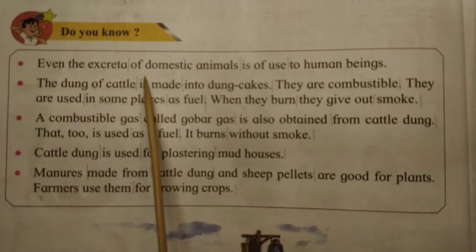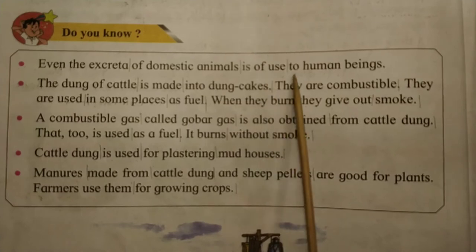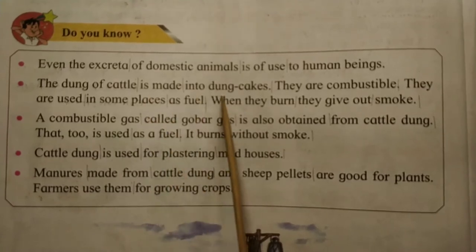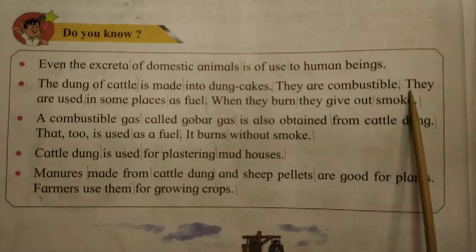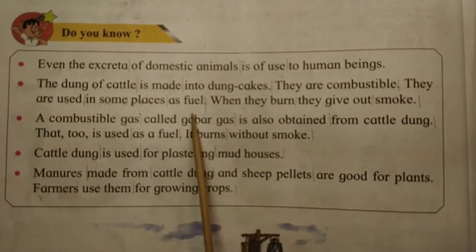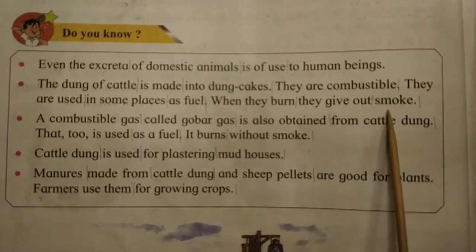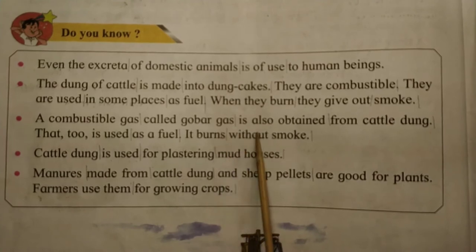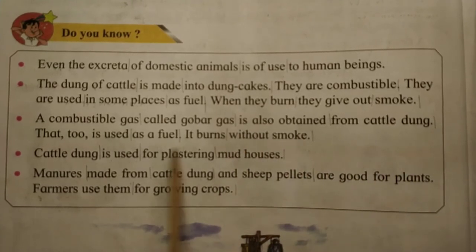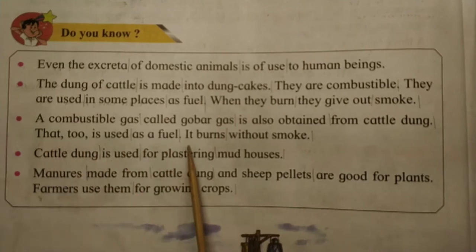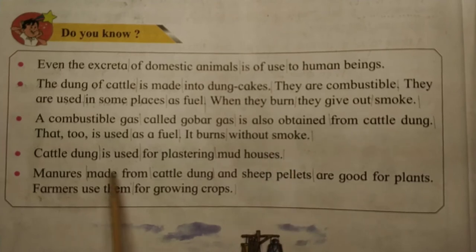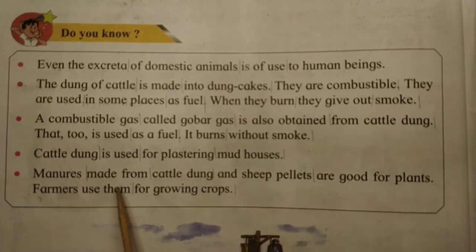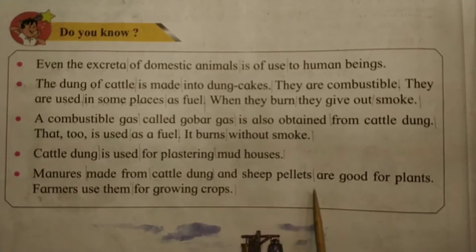Even the excreta of domestic animals is useful. The dung of cattle is made into dung cakes — they are combustible and used in some places as fuel. When they burn, they give out smoke. A combustible gas called gobar gas is also obtained from cattle dung and used as fuel; it burns without smoke. Cattle dung is also used for plastering mud houses. Manure made from cattle dung and sheep pellets is good for plants.